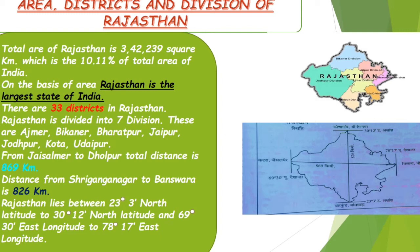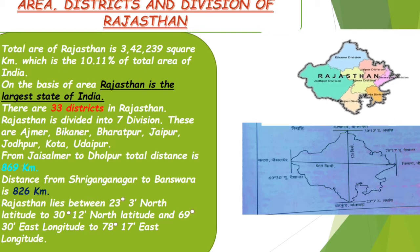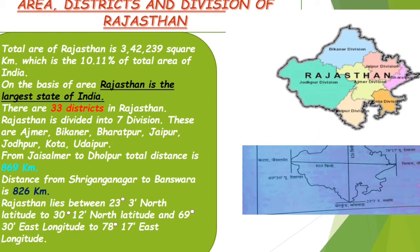Now let's talk about area, districts, and divisions of Rajasthan. The total area of Rajasthan is 342,239 square kilometers, which is 10.11% of the total area of India. On the basis of area, Rajasthan is the largest state of India. On the basis of population, Rajasthan is the seventh largest populated state of India. In Rajasthan there are 33 districts which are divided into seven divisions: Ajmer, Bikaner, Bharatpur, Jaipur, Jodhpur, Kota, and Udaipur.